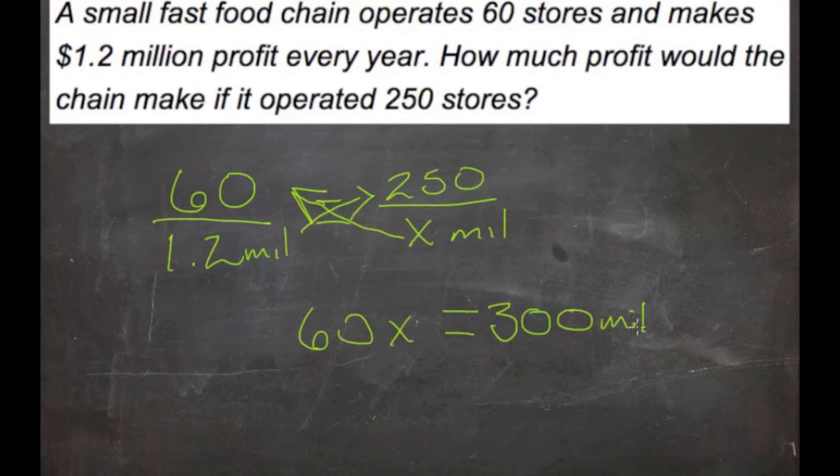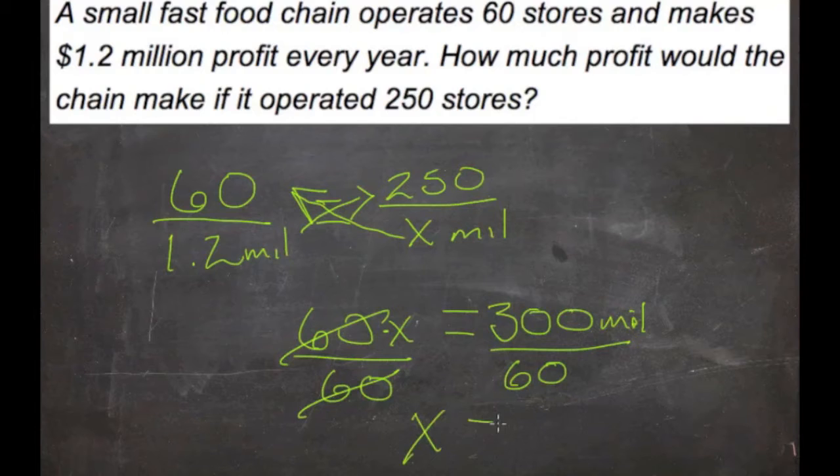Then we need to get rid of that 60x over here. So we have 60 times x. We'll divide both sides by 60. Divide this side by 60. And we'll get x equals 5 million dollars.